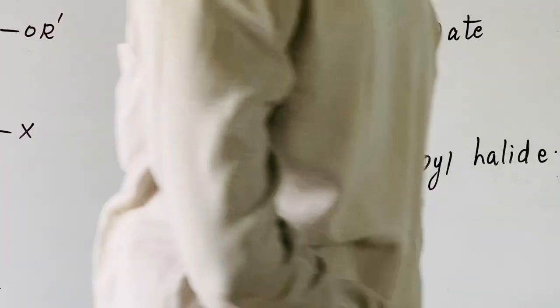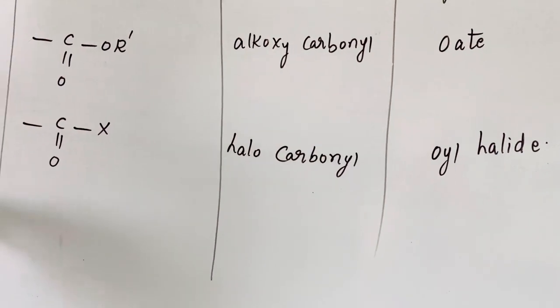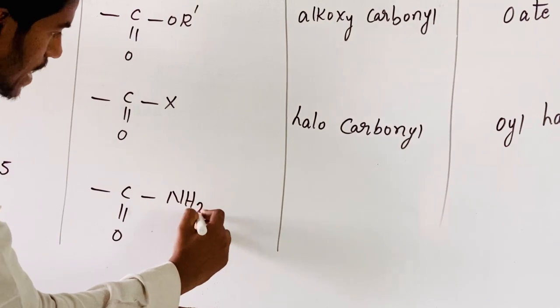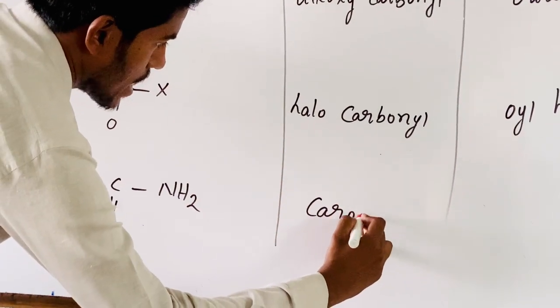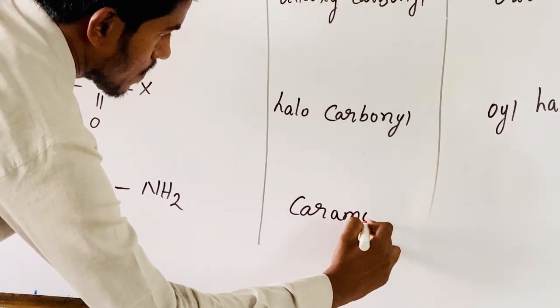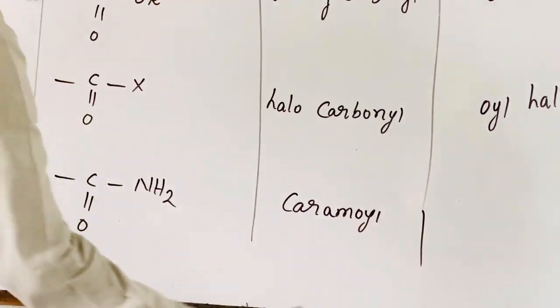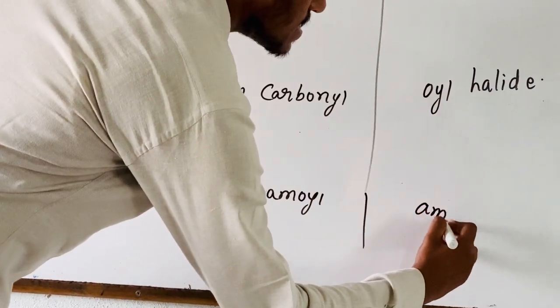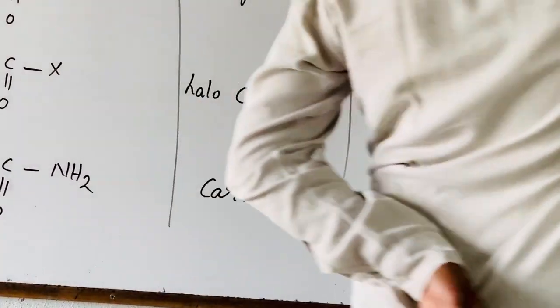Now fifth one is R-C-O-N-H2, which is amide. Carbamoyl is the secondary prefix, and amide is the secondary suffix.